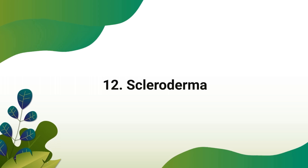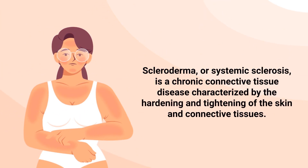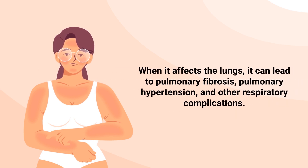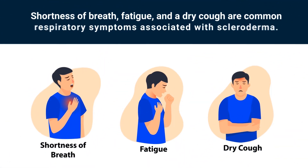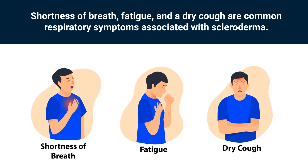Scleroderma, or systemic sclerosis, is a chronic connective tissue disease characterized by the hardening and tightening of the skin and connective tissues. When it affects the lungs, it can lead to pulmonary fibrosis, pulmonary hypertension, and other respiratory complications. Shortness of breath, fatigue, and a dry cough are common respiratory symptoms associated with this condition.